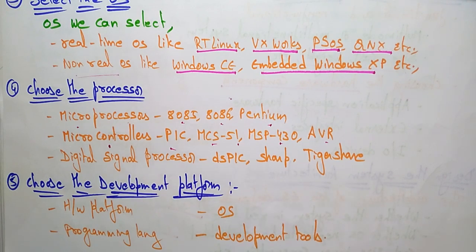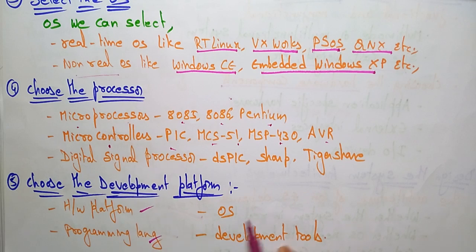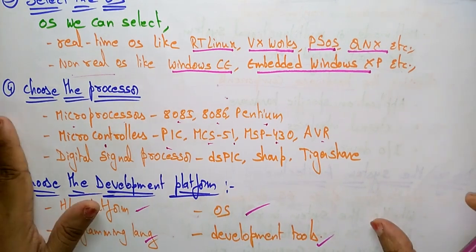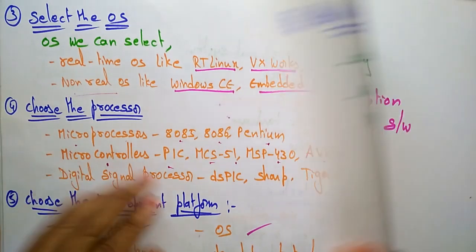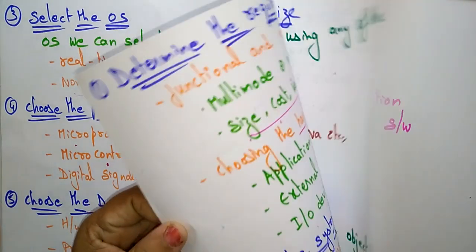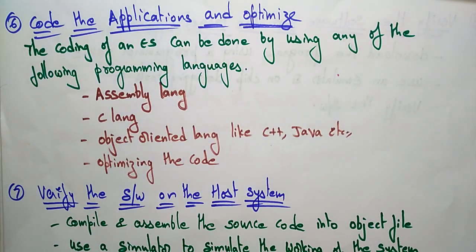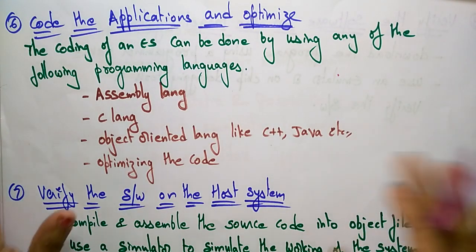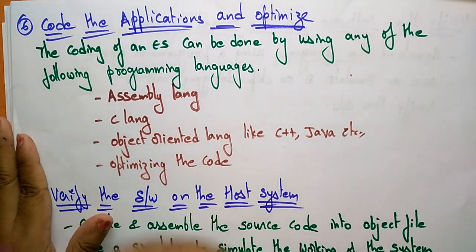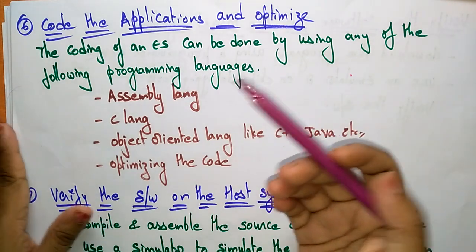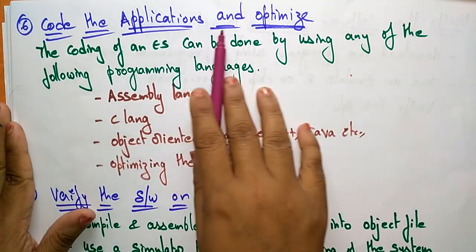The fifth step is to choose the development platform — this includes the hardware platform, programming language, operating system, and development tools you are going to use. After choosing the development platform, the next design step is to code the application and optimize.